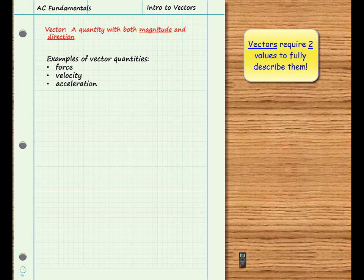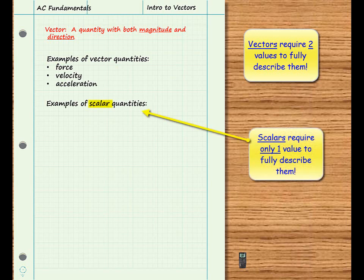For comparison, here are some quantities that are not vectors. Quantities that are not vectors are called scalars. They require only one number to fully describe them.